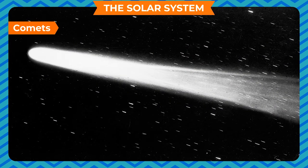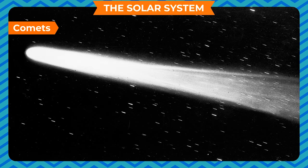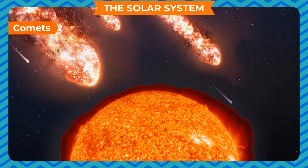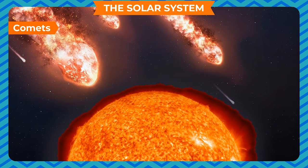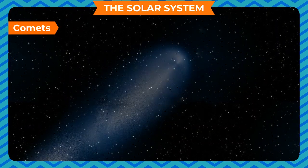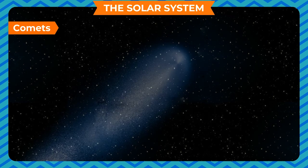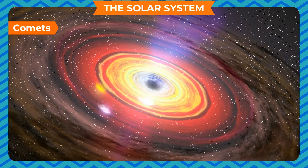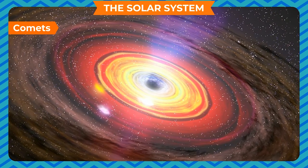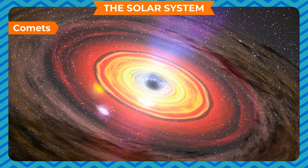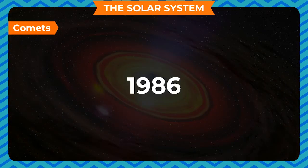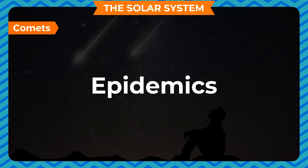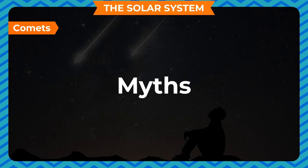Comets: They are heavenly bodies that revolve around the sun in very large orbits. A comet is a large loose collection of materials and appears as a bright glowing ball with a long glowing tail. The tail mainly consists of dust and gases. Many comets are known to appear periodically. One such comet is Halley's Comet, which appears once after nearly 76 years. It was last seen in 1986. Some people think that comets are messengers of disasters such as wars, epidemics and floods, but these are all myths and superstitions.